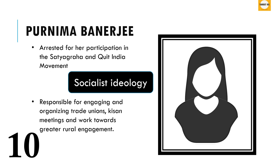Next is Purnima Banerjee. She was arrested for her participation in the Satyagraha and Quit India Movement. One of the most striking features of her speeches in the Constituent Assembly was her commitment to socialist ideology. She was also responsible for engaging and organising trade unions, Kisan meetings, and working towards greater rural engagement.